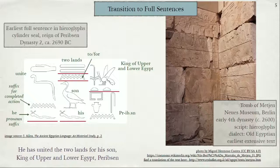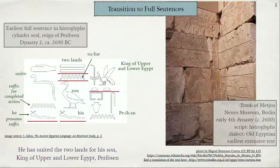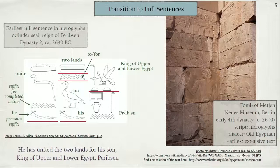The king of upper and lower Egypt, Per Ibsen — the subject is just going to be 'he.' So: 'He united the two lands for his son' — the king of upper and lower Egypt, Per Ibsen. It's very simplified; there are some signs we'd expect that are missing, but it's also on a very small ceremonial object, so superfluous signs have perhaps been left out. Anyways, that is the first sentence that we have.